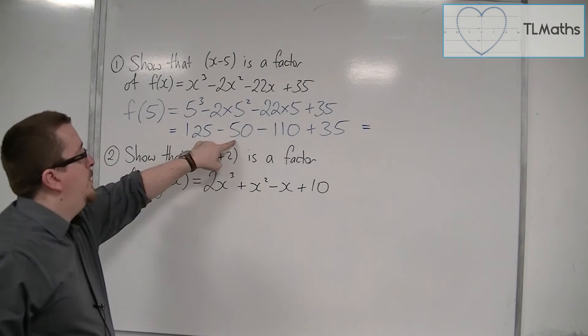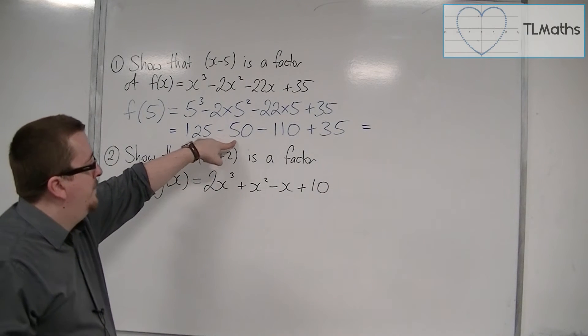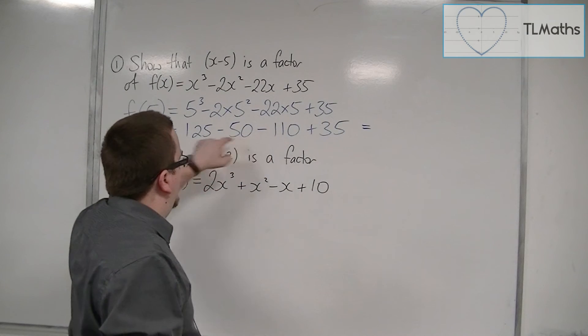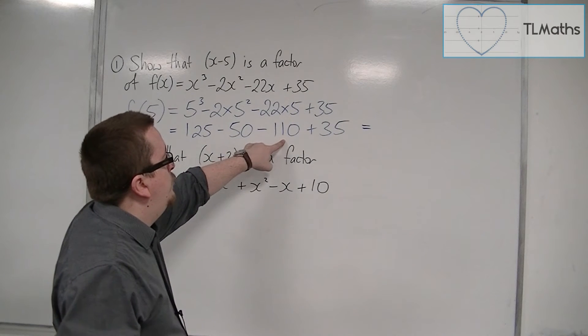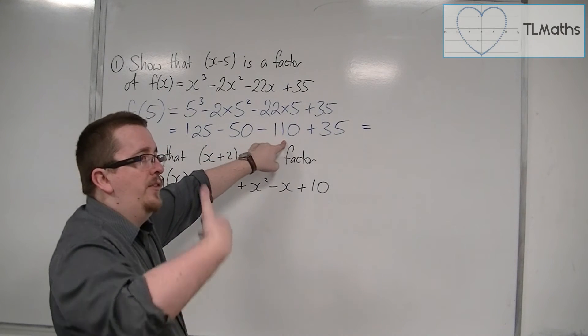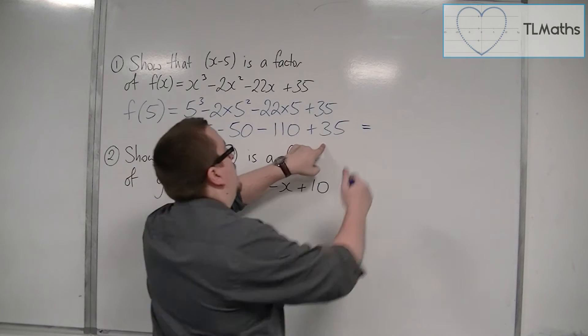So 125 take away 50 is 75, then take away 110 is minus 35, plus 35 would be 0.